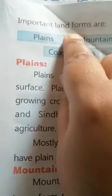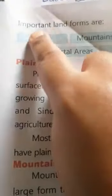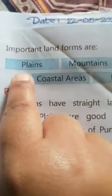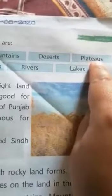After that, important land forms. How do you explain the important land forms? The important land forms are: Plains, Mountains, Deserts, Plateaus.